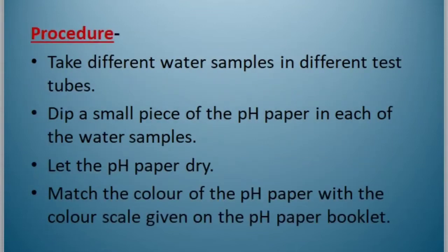Procedure: Take different water samples in different test tubes. Dip a small piece of pH paper in each of the water samples. Let the pH paper dry. Match the color of the pH paper with the color scale given on the pH paper booklet.